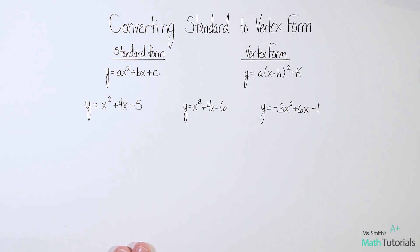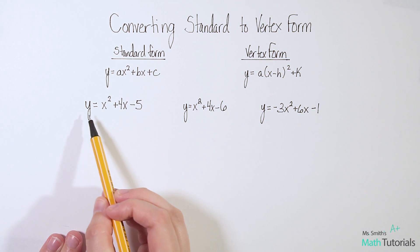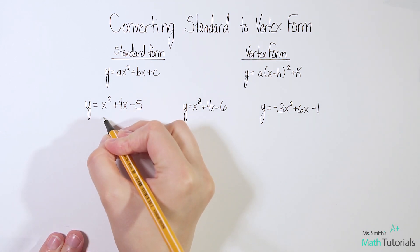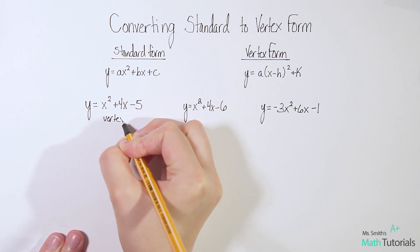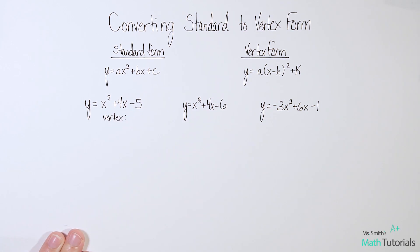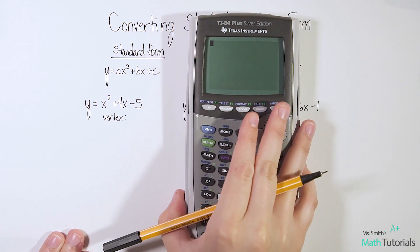In this video, we're just talking about converting standard to vertex form. I've given you three different examples here that are in standard form, and we need to put them in vertex form. I'm going to show you a really quick, easy shortcut to go from standard to vertex form. I've given you a quadratic here. First thing I need to know is what is the vertex of that quadratic? How can I quickly figure out the vertex?